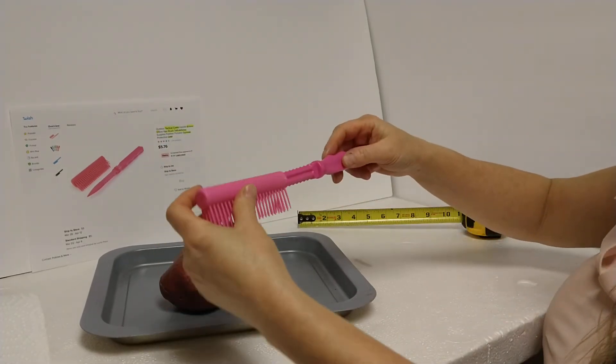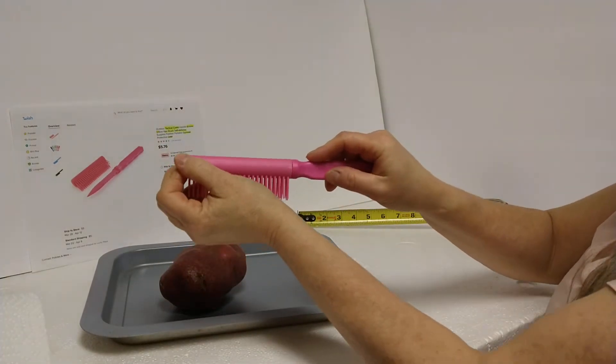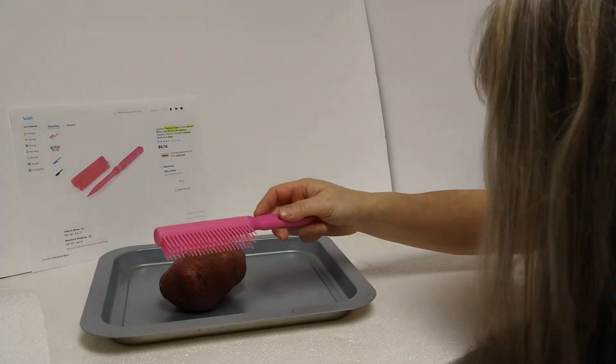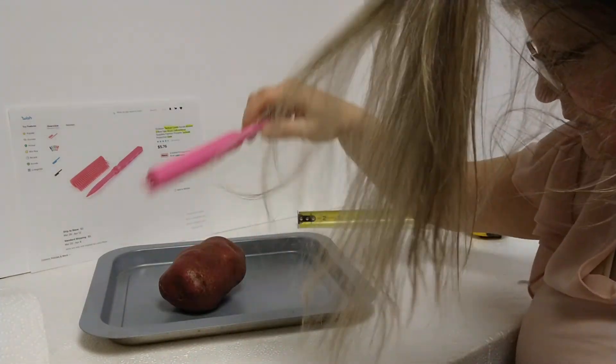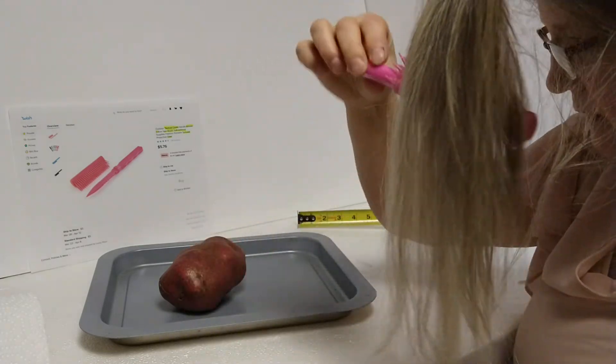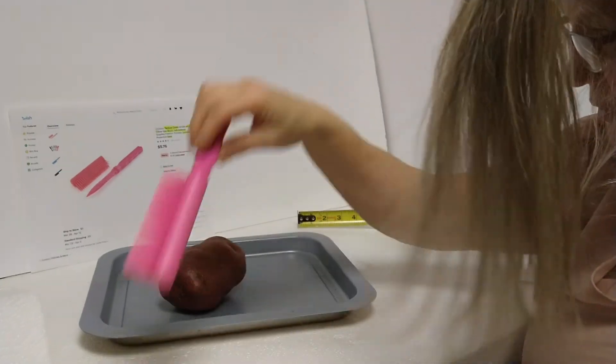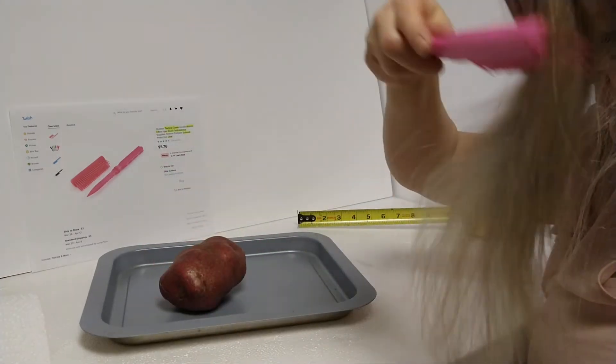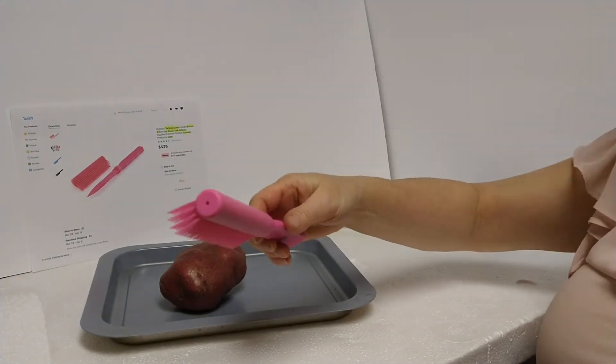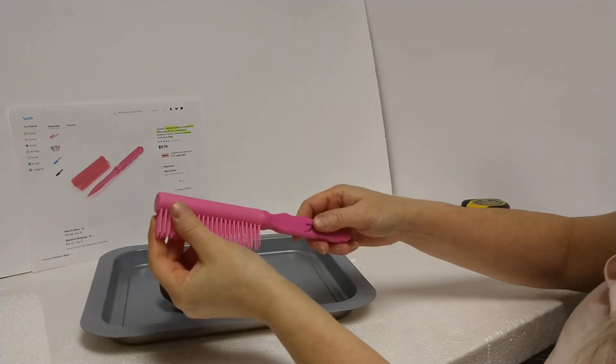So let's try out the comb part first. Not that I usually use a comb on my hair, but let's check it out. A little snarling. I don't like to break my hair. I usually don't use brushes on my hair, but you could use this as a brush if you wanted to. Not my preference, but just for demonstration purposes. Okay, let's get to the knife.